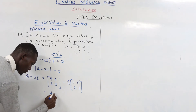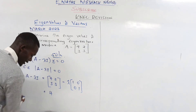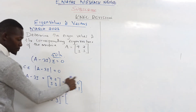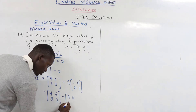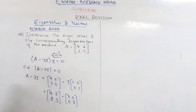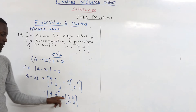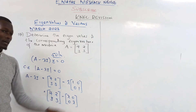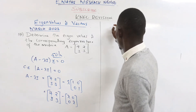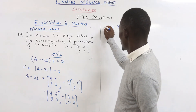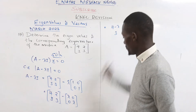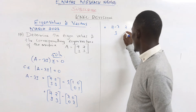This simplifies to [4, 2; 3, 3] minus [lambda, 0; 0, lambda]. Subtracting the two matrices: 4 minus lambda, 2 minus 0 which is just 2, 3 minus 0 which is just 3, and 3 minus lambda remains as 3 minus lambda. So A minus lambda I equals [4 minus lambda, 2; 3, 3 minus lambda].